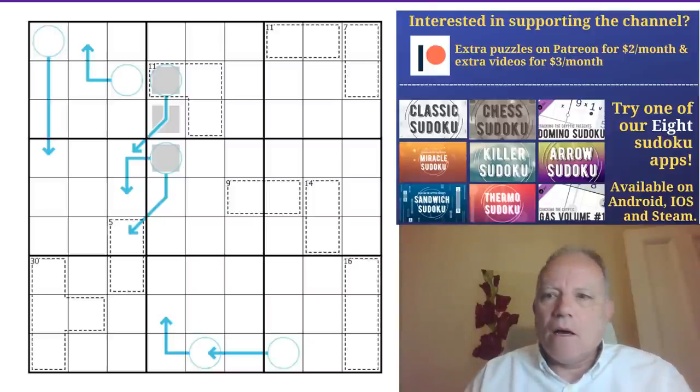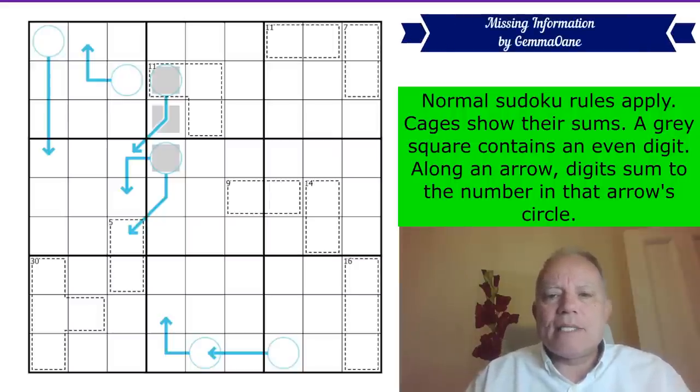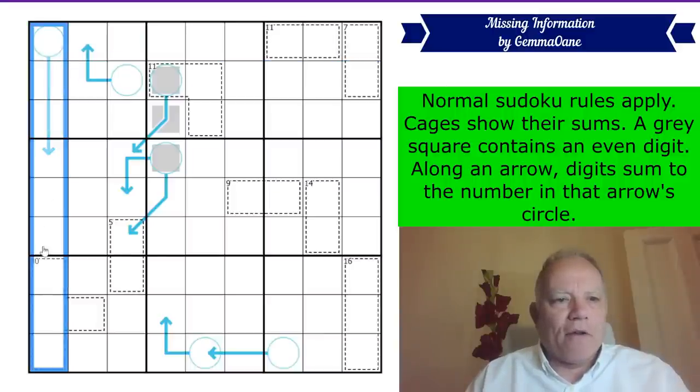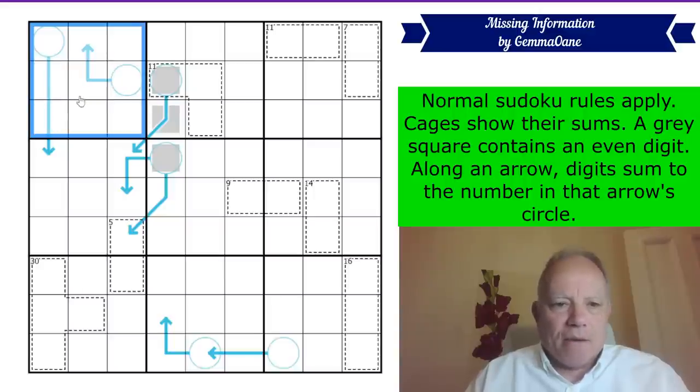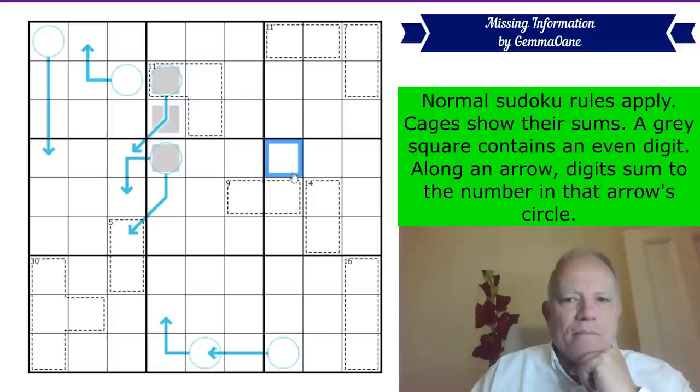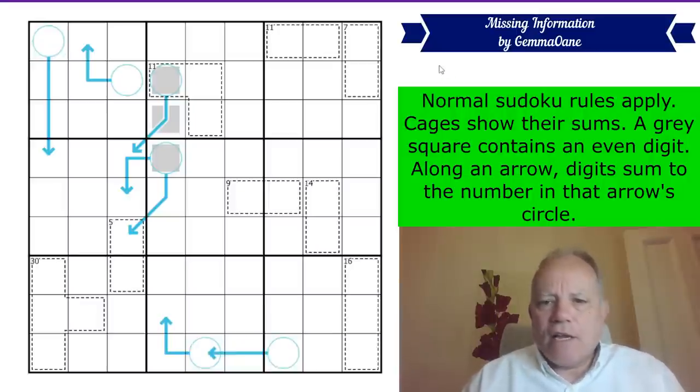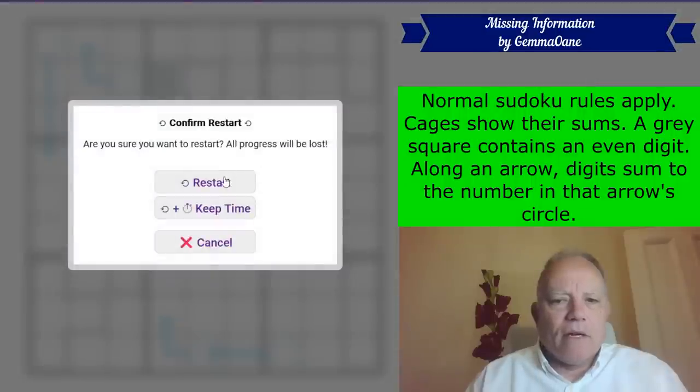Patreon is there as well. Sven's Sudoku pad which has had an update lately, all on the links under the video. But the first one is to this debut puzzle, Missing Information. And the rules are as follows: Normal Sudoku rules apply. We're going to be putting one to nine in every row, every column and every three by three box. Cages show their sums. And a grey square contains an even digit. There are three of those as far as I can see in the puzzle. Along an arrow, digits sum to the number in that arrow's circle. We've got one circle here which has two arrows. They must have the same sum. And we've got one sort of stepping arrow where this cell acts both as a circle for that arrow and as one of the arrow cells in this arrow. Give it a try. I am going to reset my clock and start now.